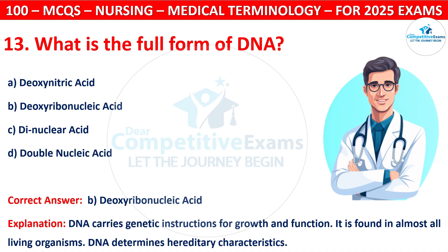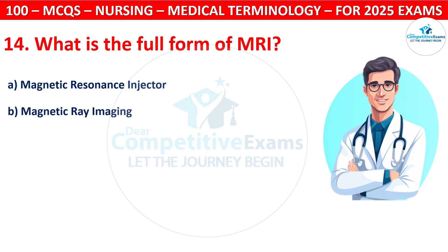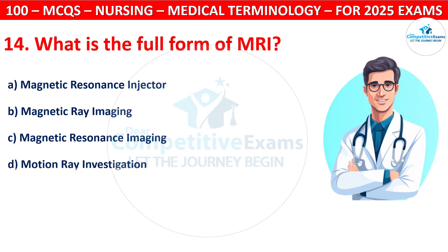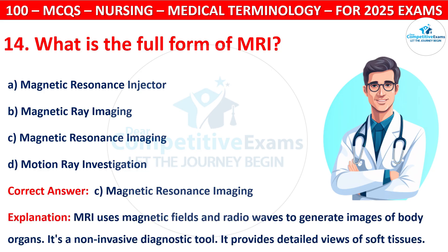Question 14: What is the full form of MRI? Options are: Magnetic Resonance Injector, Magnetic Ray Imaging, Magnetic Resonance Imaging, or Motion Ray Investigation. The correct answer is C, that is Magnetic Resonance Imaging. MRI uses magnetic fields and radio waves to generate images of body organs. It is a non-invasive diagnostic tool and provides detailed views of soft tissues.